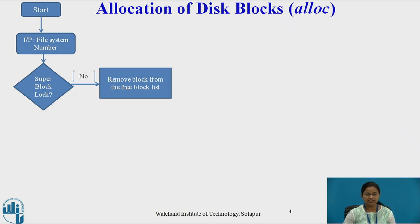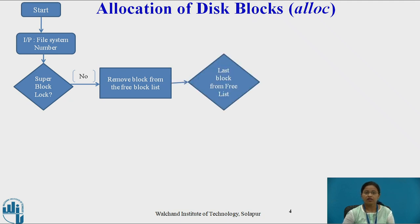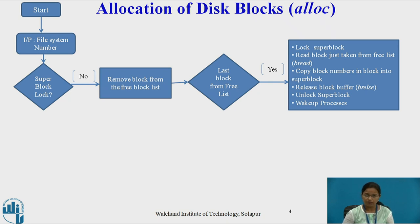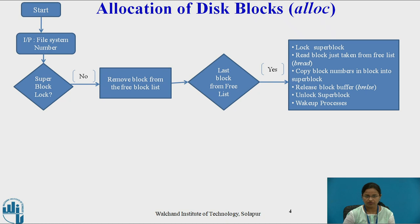If the super block is not locked — meaning it is not in use by any other process — then it removes the block from the free block list. If it is the last block of that array, the super block is locked because the super block array is now empty. We then need to read the block just taken from the free list, copy that block number into the super block, release the block buffer using the buffer release algorithm, unlock the super block, and wake up all processes that went to sleep because the super block was locked.